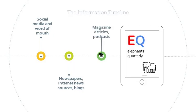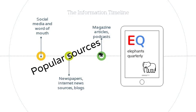In the weeks and months that follow, magazine editors may use and analyze the news sources already created, and write longer, more detailed articles about the topic. Magazine articles generally take longer to create, due to their depth of analysis. By the way, the sources that we've looked at so far are referred to as popular sources. They are created for a general audience to inform, describe, or entertain.